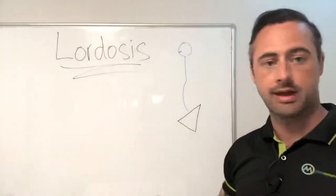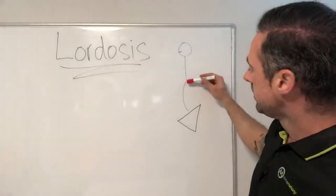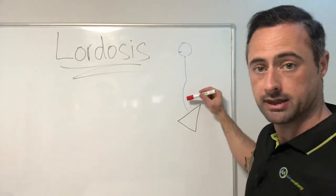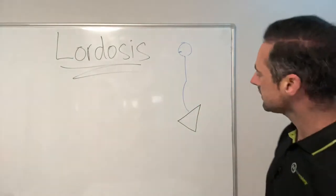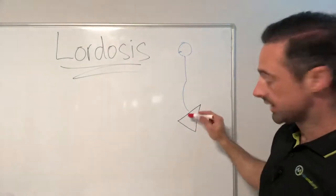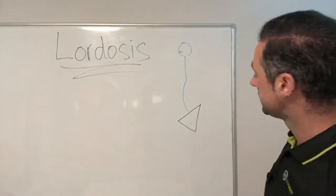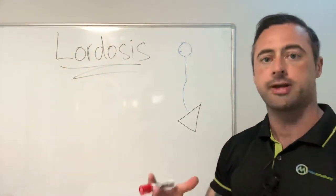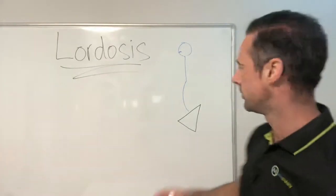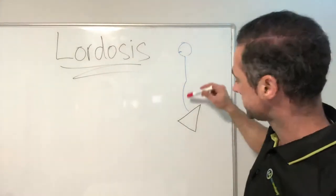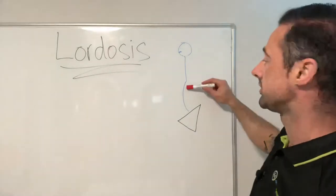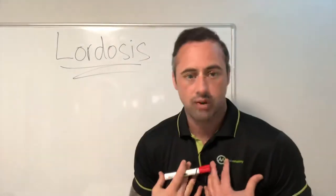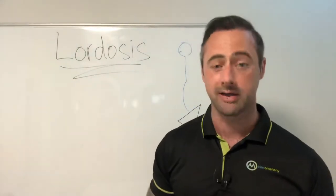Anatomically, we're going to focus here on the lower back — the lumbar spine — and this triangle here represents the pelvis. The two are vital when we think about lordosis because it's not just a lower back issue. Lordosis doesn't just have a knock-on effect downwards; it also goes upwards, usually causing that rounding of the shoulders and upper back, which is called kyphosis.